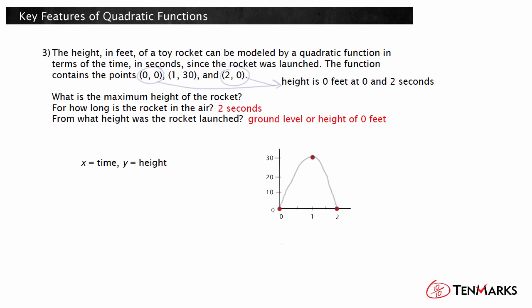The maximum height of the rocket would occur at the vertex of the parabola. The parabola is symmetric, so the vertex must be halfway between x equals 0 and x equals 2. This means the point 1, 30 is the vertex. The point 1, 30 means that after 1 second, the height of the rocket is 30 feet. So the maximum height of the rocket is 30 feet.